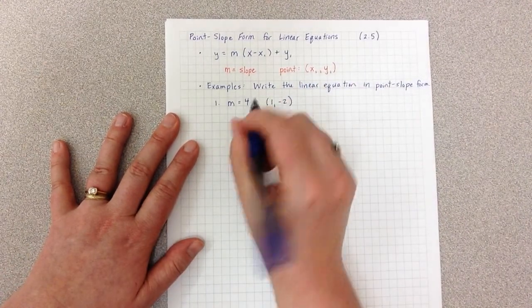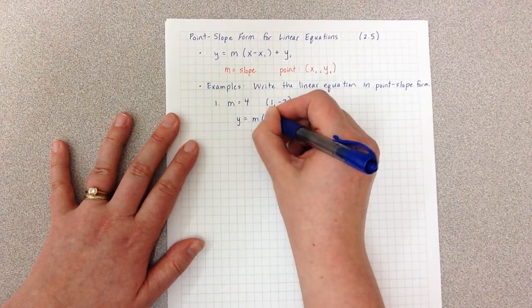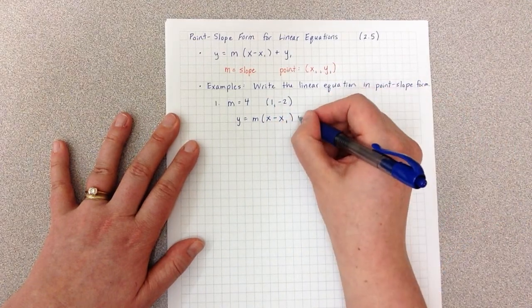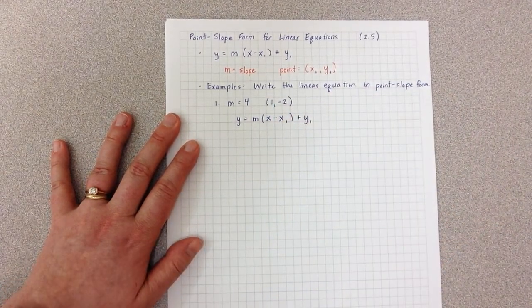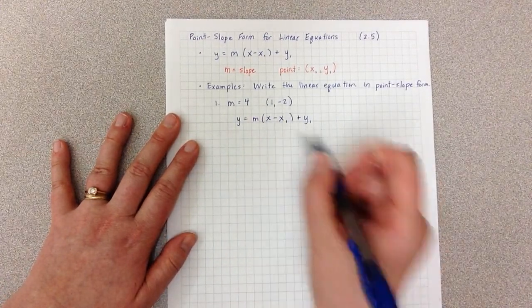So we start with the standard form, y equals m times the quantity x minus x1 plus y1. And now I'm going to plug in the various values here. So m is 4.